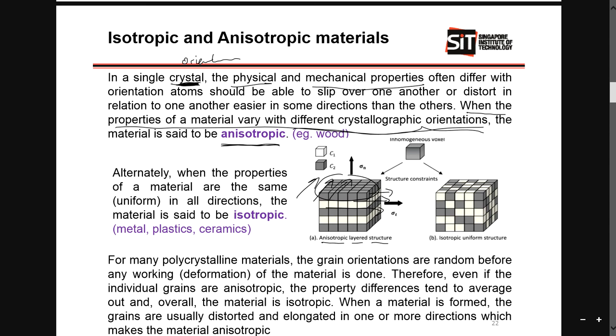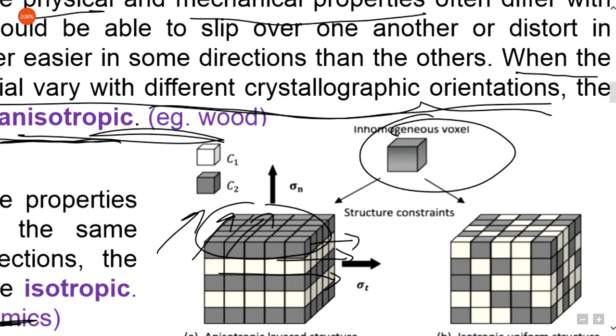But anyway, in any case, they are actually layered structures and they are anisotropic. The examples you should memorize. But what I want to go into here is inhomogeneous voxel.